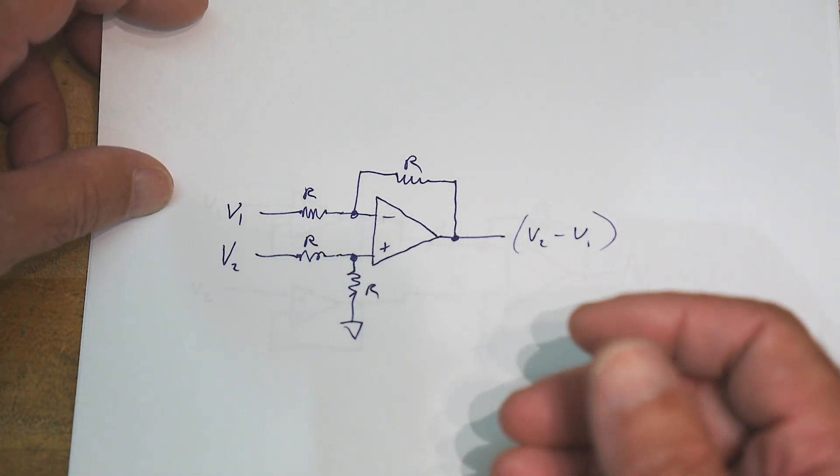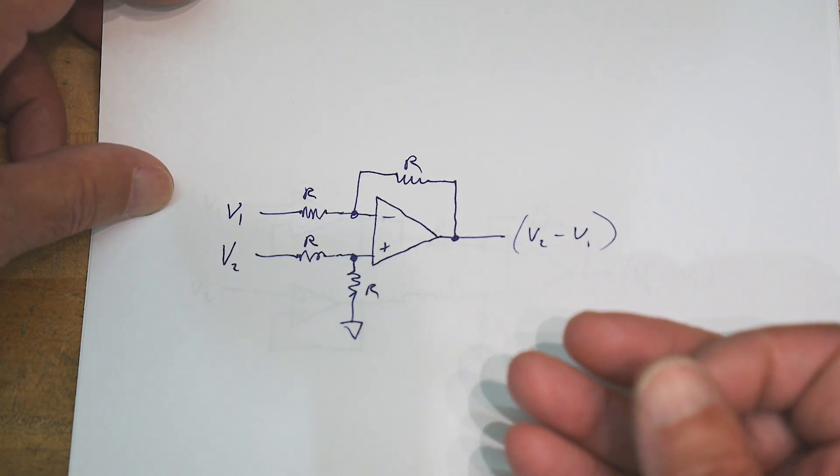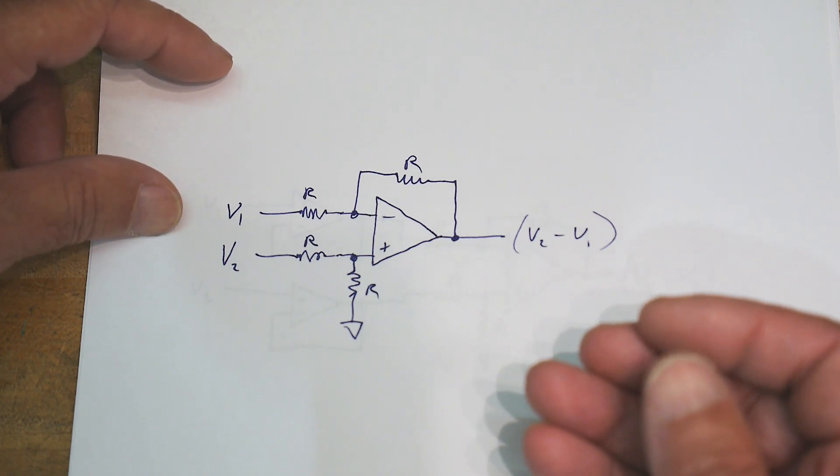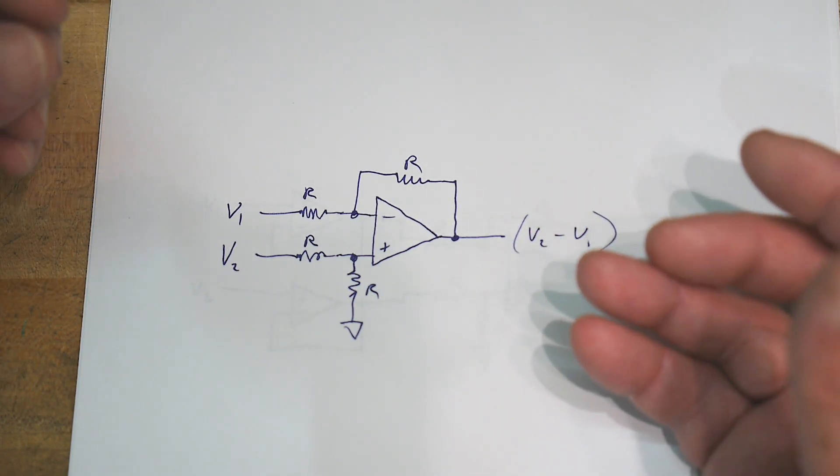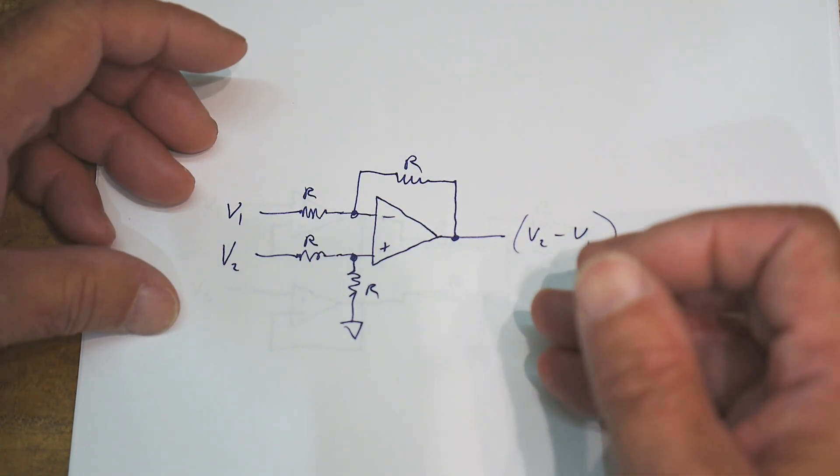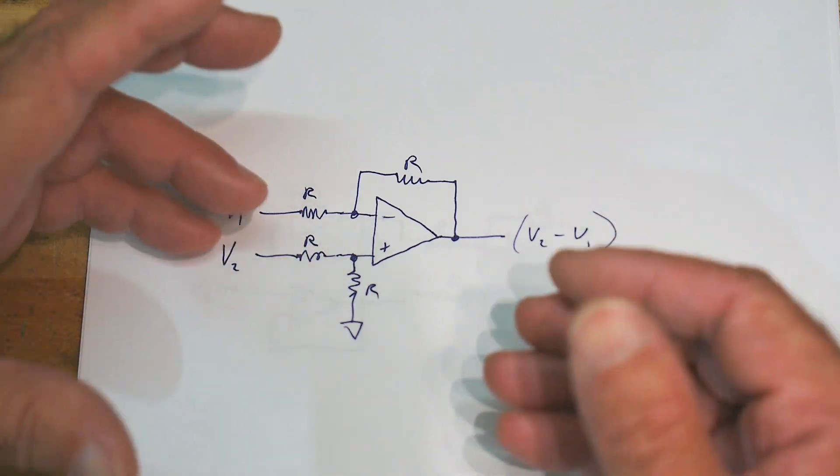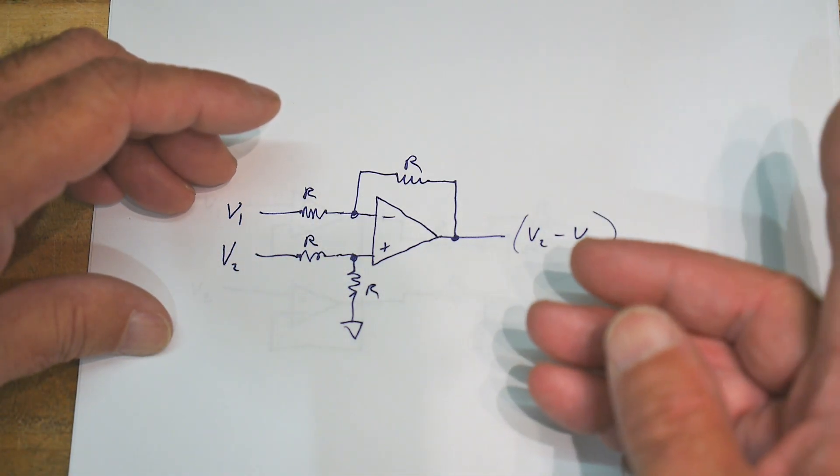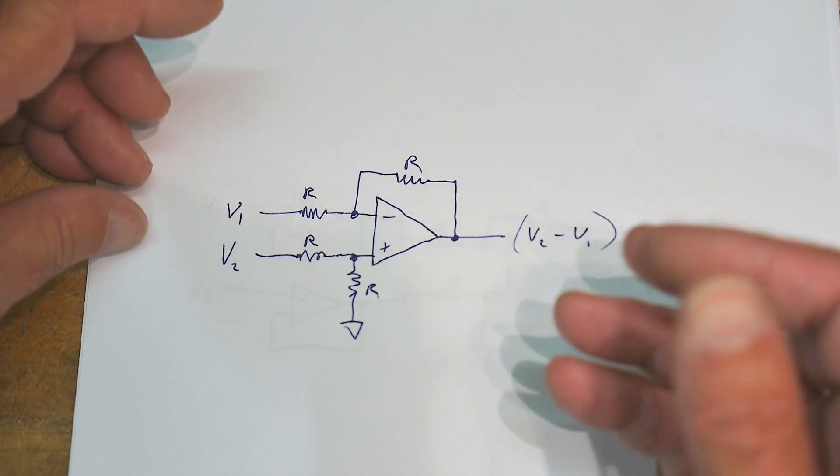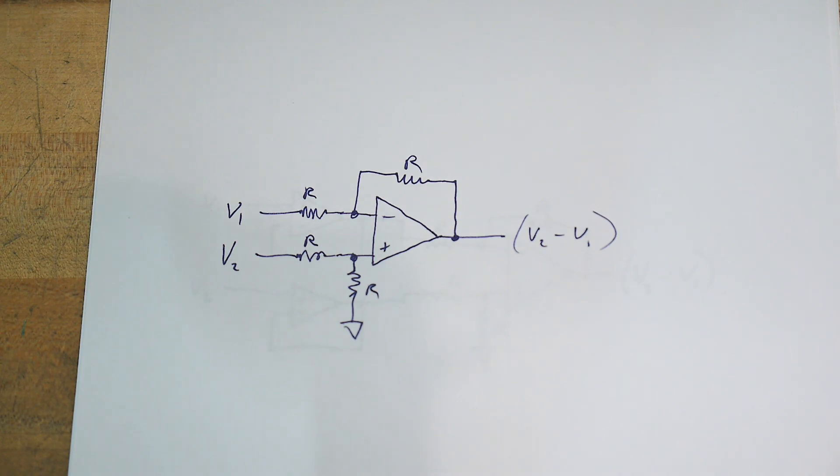A lot of times you want to have the measuring device not affect the measurement. Back in the old days when you had analog volt meters, they were just a resistive divider that went into a meter and they might have 20k ohms per volt input, and that was sometimes too high. So they came up with vacuum tube volt meters, and vacuum tube volt meters had a very very high input impedance so that the measuring device didn't affect the circuit.